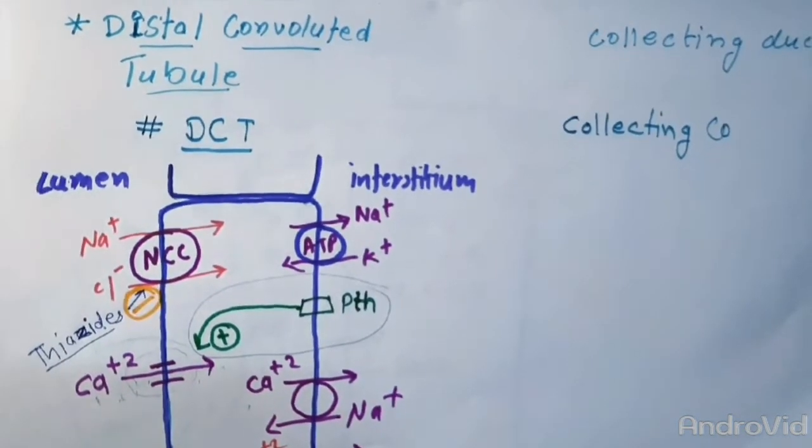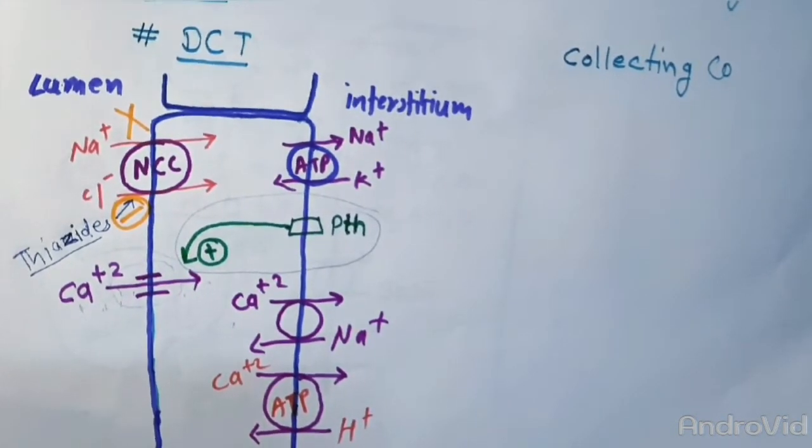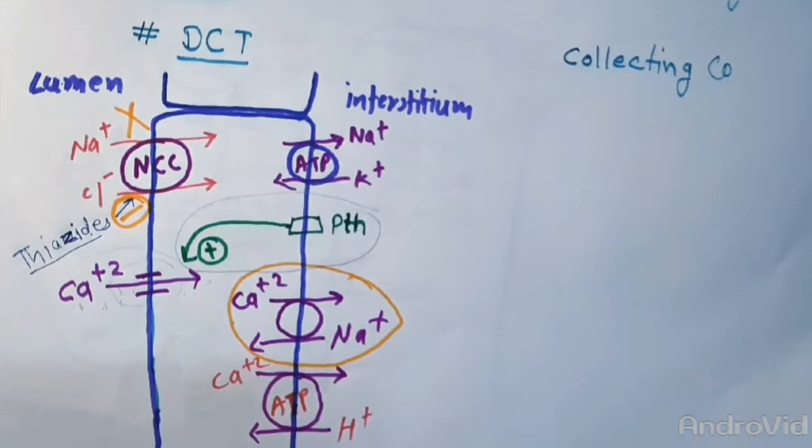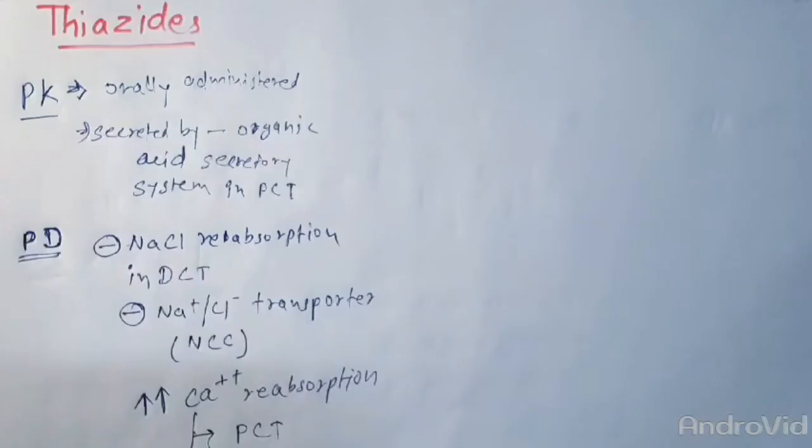And in DCT, they block NCC. So what happens is the sodium chloride absorption will be decreased, which will result in enhancement in the calcium sodium exchange in the basolateral membrane, which will result in more absorption of calcium.